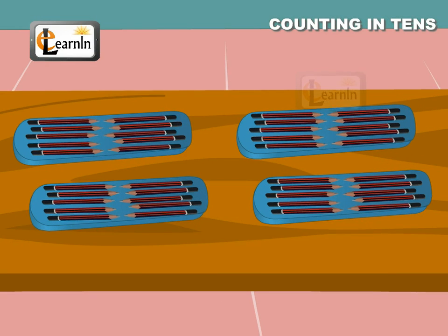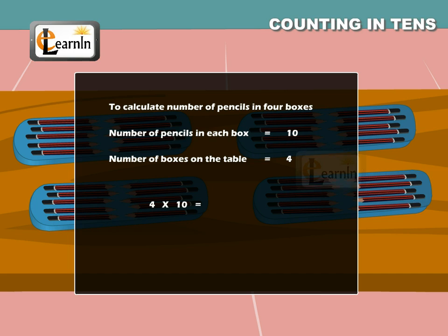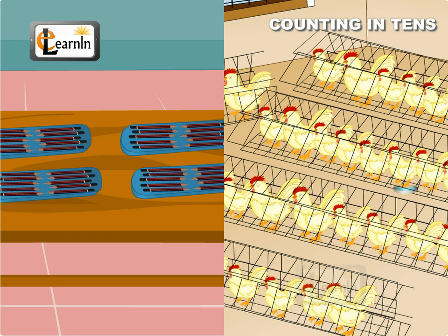Here are four pencil boxes with ten pencils in each of them. If we have to calculate the total number of pencils, then we just have to multiply the number of pencils in a box by the number of boxes. Hence, the total number of pencils are four into ten, which is equal to forty. Counting becomes easier and even exciting if it is done in groups starting with ten.